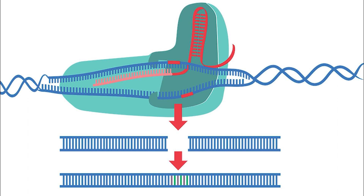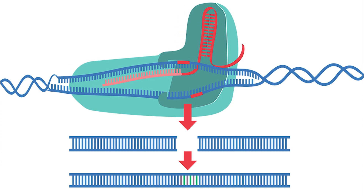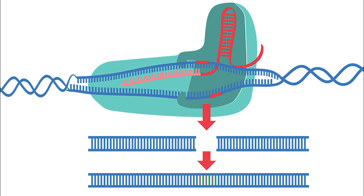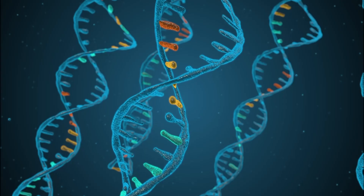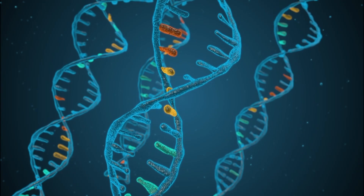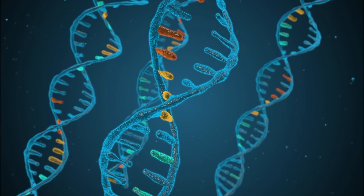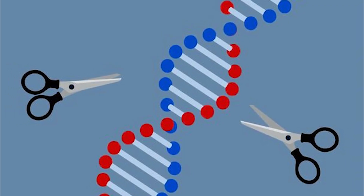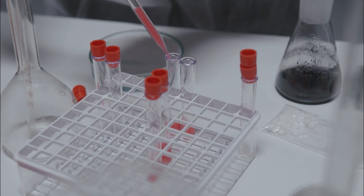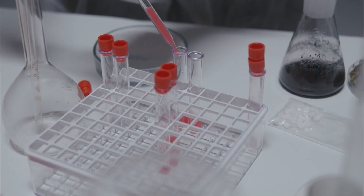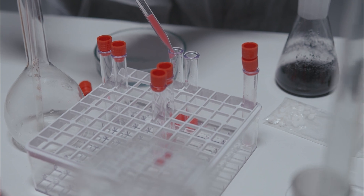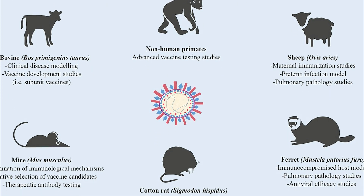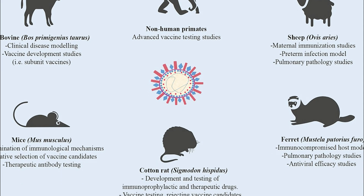Once the Cas9 enzyme is in place, it can make a cut in the DNA strand, allowing for the insertion or removal of specific genes. One of the most exciting applications of CRISPR is its potential to treat genetic disorders. By making precise changes to the DNA sequence, CRISPR has the potential to correct mutations and cure genetic disorders. This has already been demonstrated in various animal models, and early-stage human trials are underway.